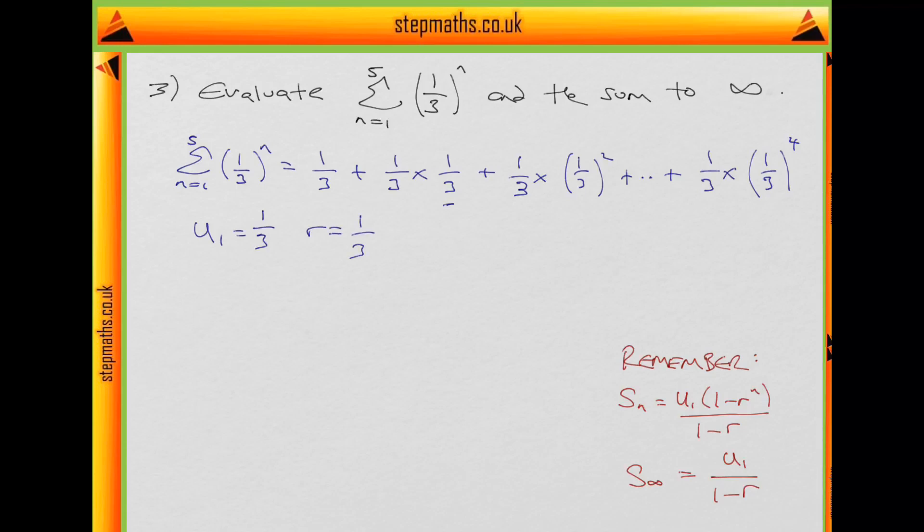and common ratio 1 third. So we can immediately plug this into our formula at the bottom here for the sum of a geometric sequence. So we have that the sum from n equals 1 to 5 of 1 third to the power of n equals u1 is a third into 1 minus, common ratio is also a third, to the power of 5, because our n is 5 here, over 1 minus a third.